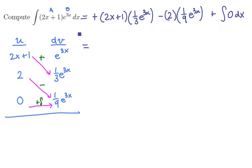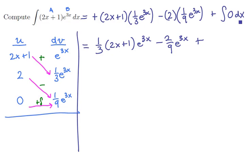Now, if we clean this up, we're going to have 1 third times 2x plus 1 times e to the 3x. The next term is negative 2 ninths times e to the 3x. Plus, the integral of 0 is just a constant.